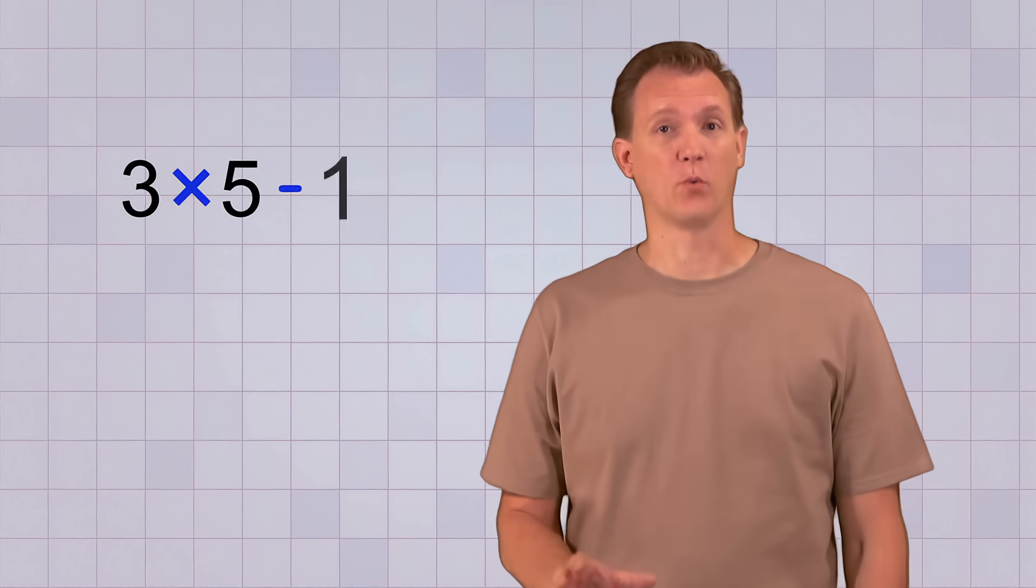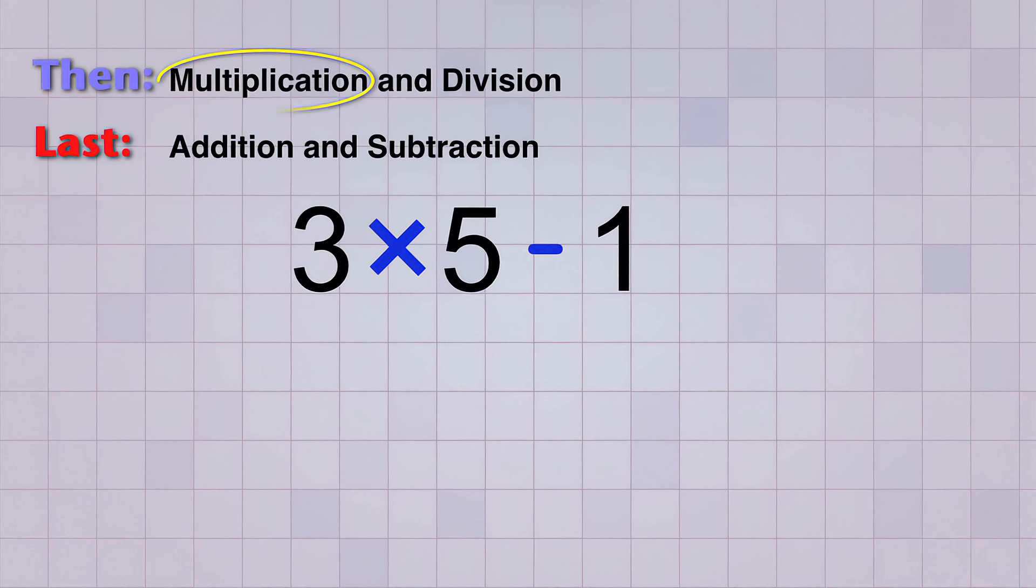Now let's try this one. 3 times 5 minus 1. Our rules tell us that multiplication is higher on the list than subtraction, so we do 3 times 5 first. And that gives us 15, and then we subtract the 1, which leaves 14 as our final answer.